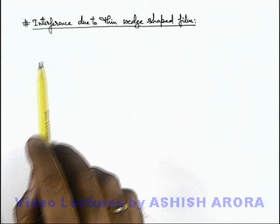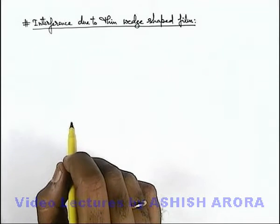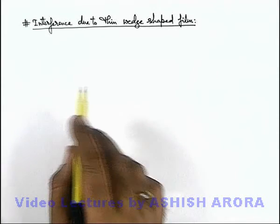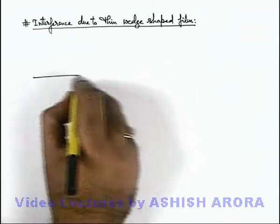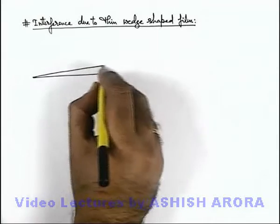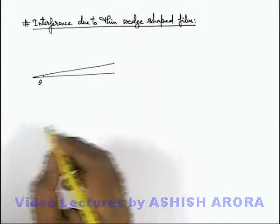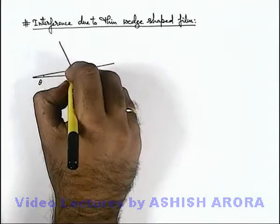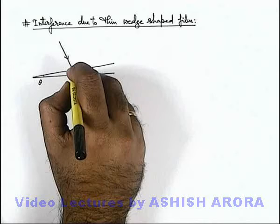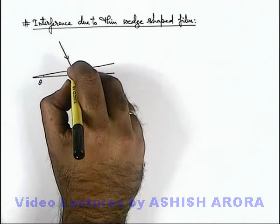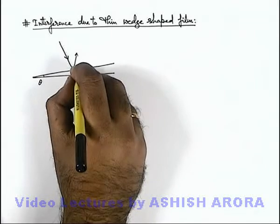Now we'll study about interference due to a thin wedge-shaped film. For a normal thin film in reflected and refracted light, we've already studied about the interference effect. Here, if we are given a wedge-shaped film having a very small angle theta, when light is incident onto this film at near normal incidence, a part of light is reflected from the front face and another part is reflected from the lower face.